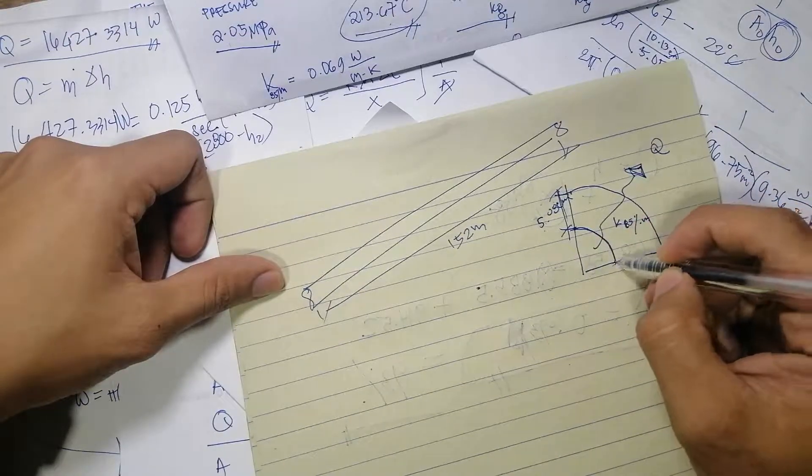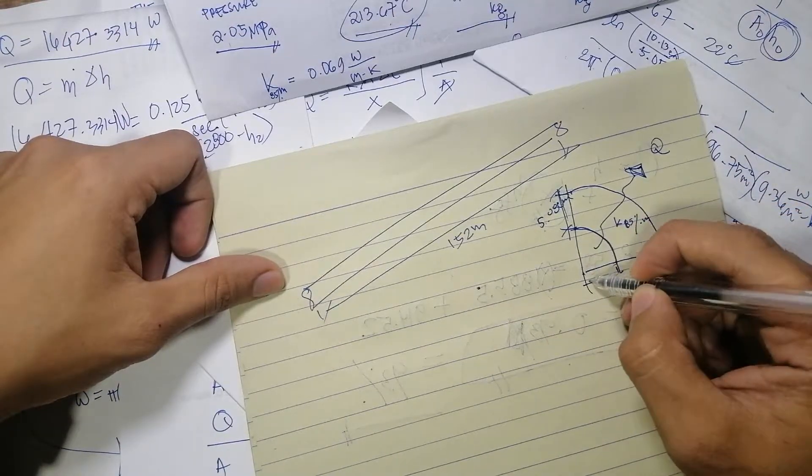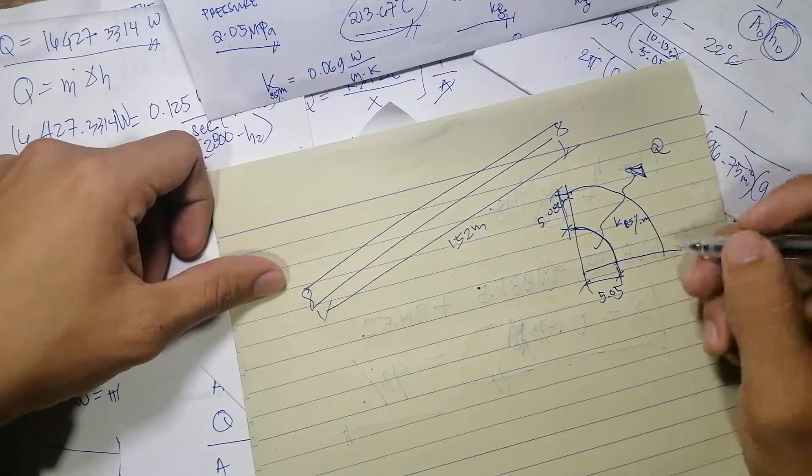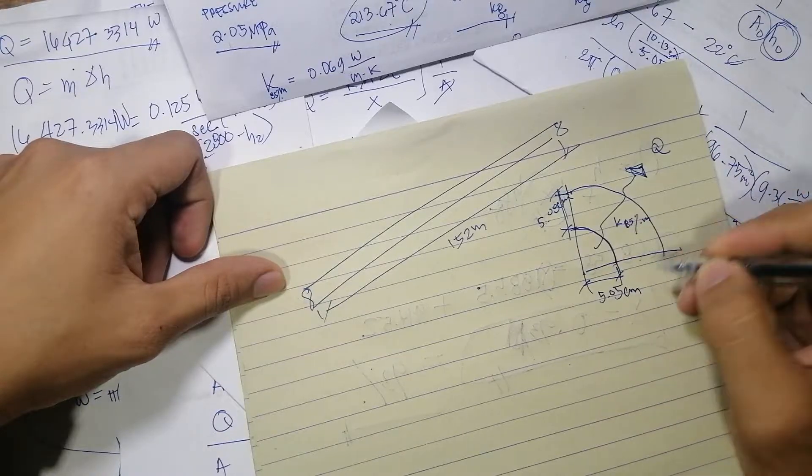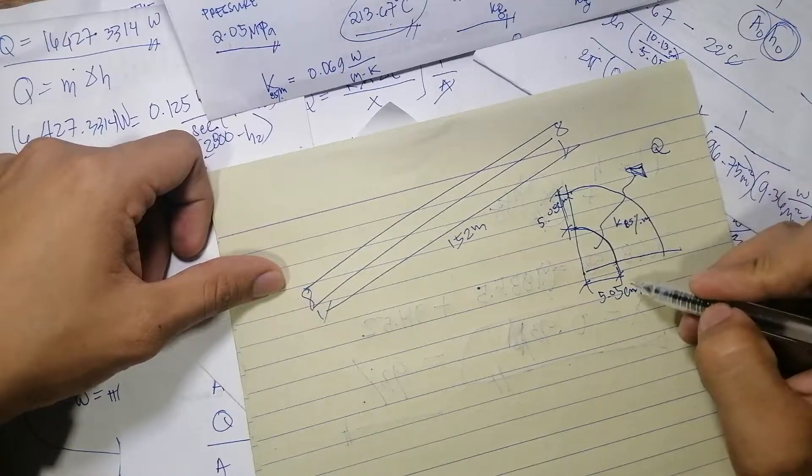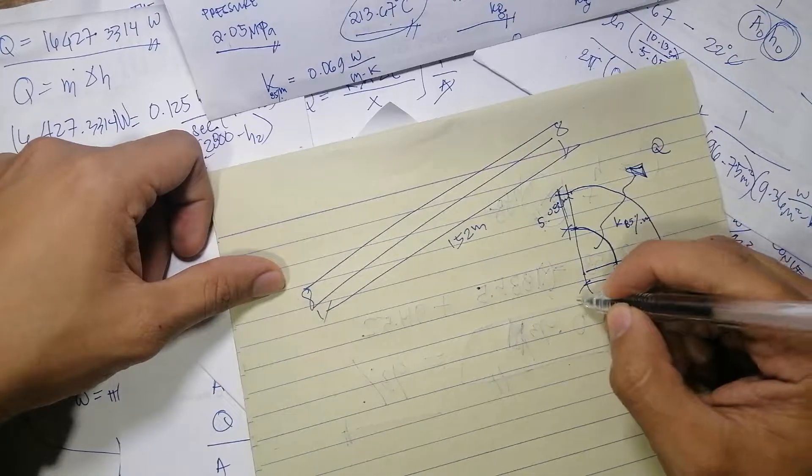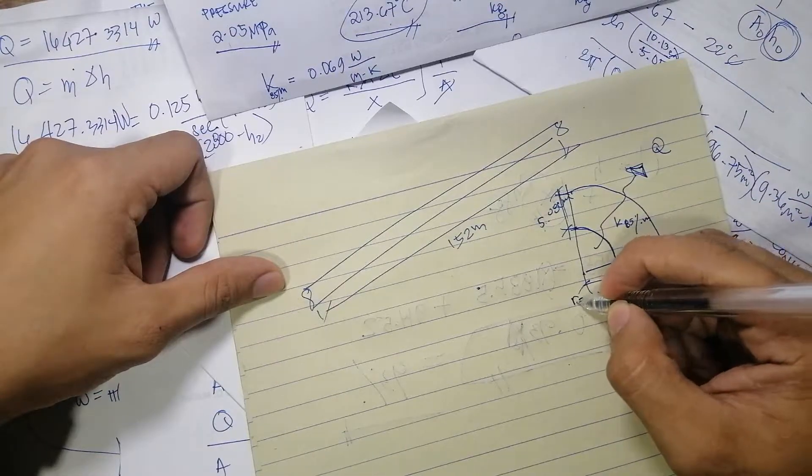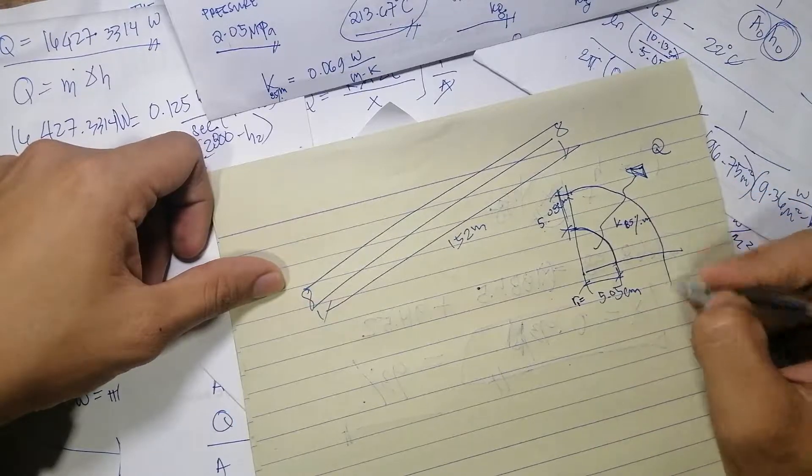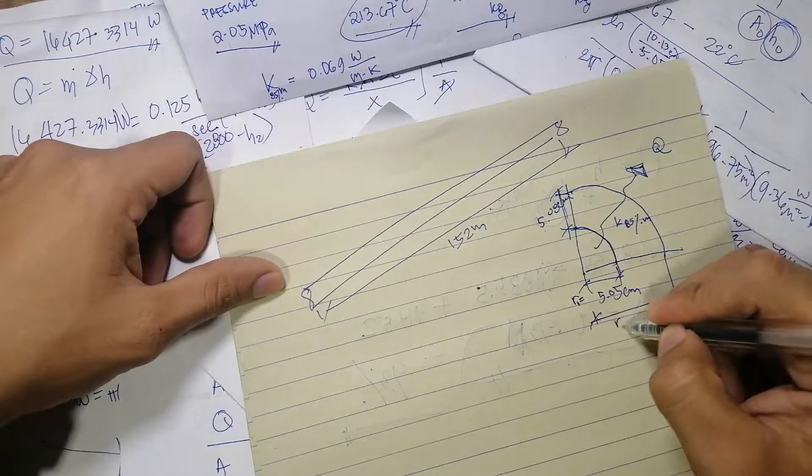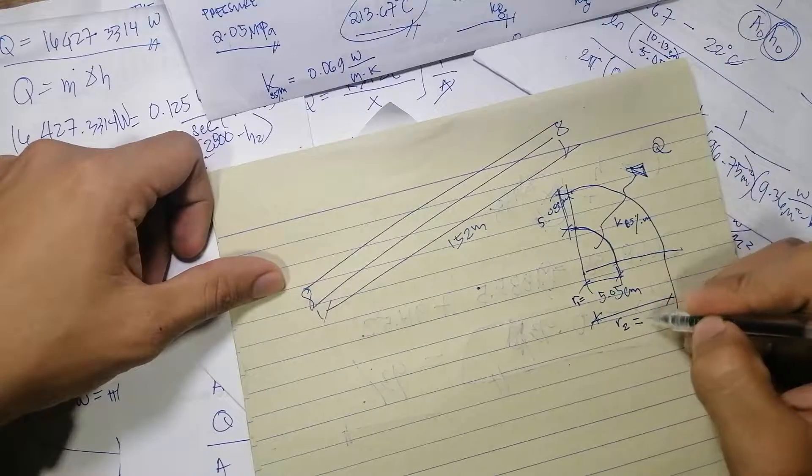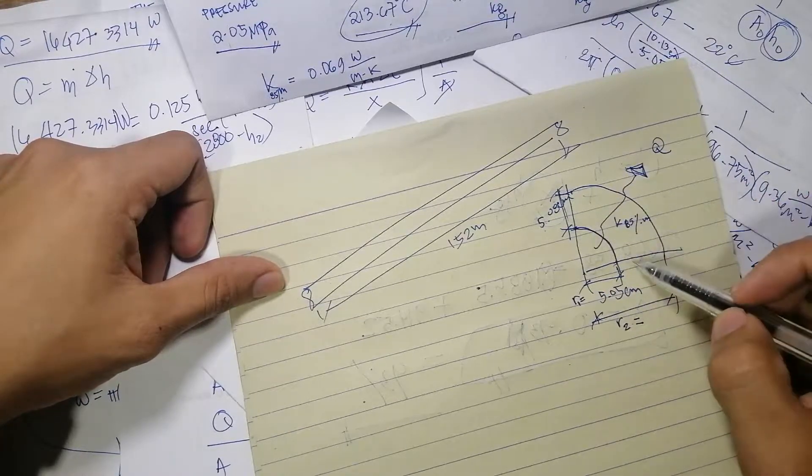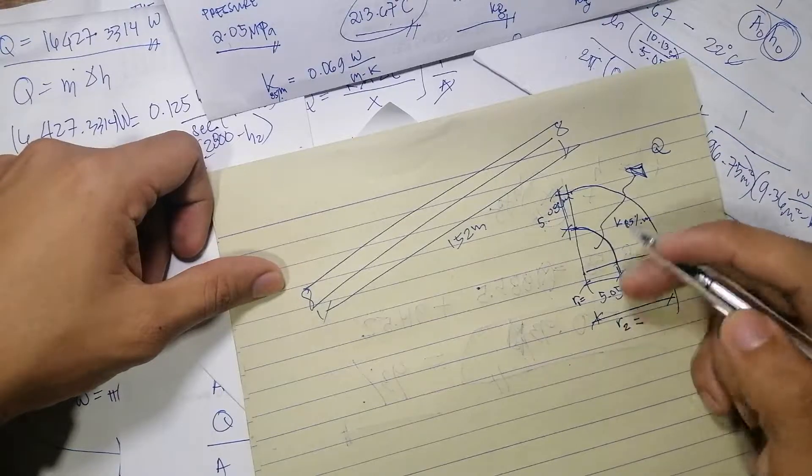So we have the value of 5.05 centimeter, and we will be going to indicate that as radius 1. And this will now become the radius 2, which is equal to 10.13, the sum of the thickness of insulation and the radius of the pipe.